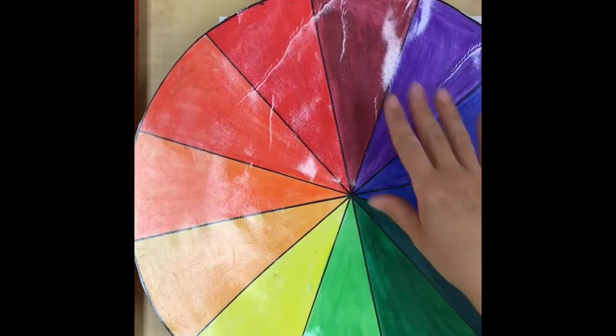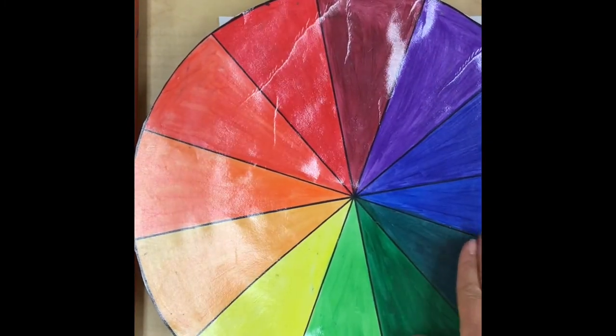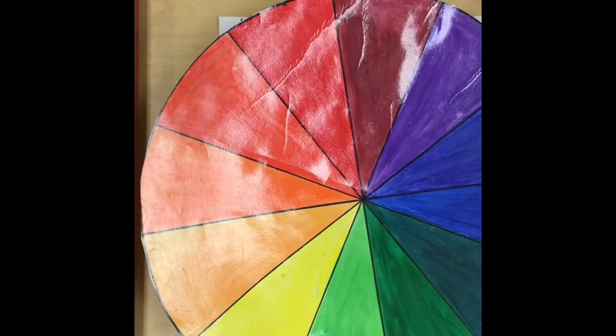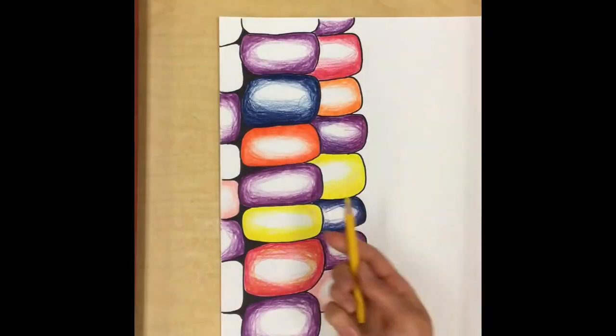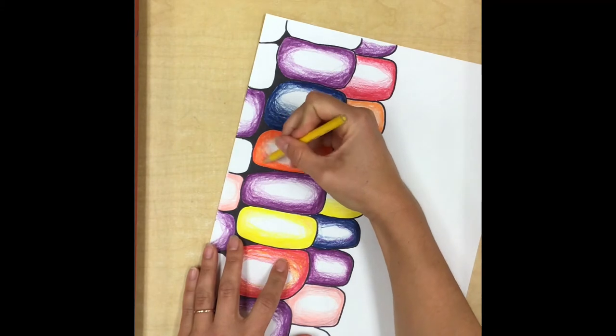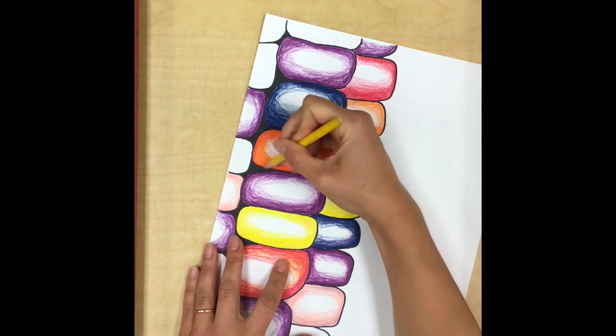So I'm going to go ahead and pick an analogous color for orange, and I've picked yellow. And I'm going to blend in a little bit of this surprise color into the kernel.